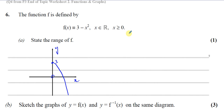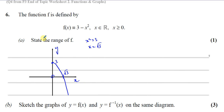That's how the graph looks with the restricted domain — it doesn't exist on the left side, only on the right. The x-intercept: when y = 0, x² = 3, so x = √3 (we only take positive √3 since x ≥ 0). With this restricted domain, the range of f(x) is f(x) ≤ 3.